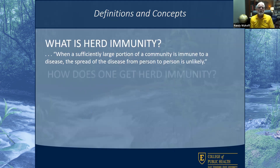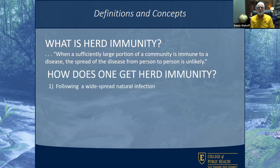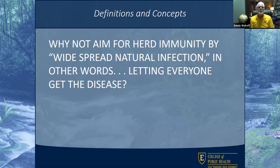There are two ways to get herd immunity: from widespread natural infection or from widespread use of a vaccine. When it comes to COVID-19, some people have said, why don't we aim for herd immunity by widespread natural infection — in other words, letting everyone get the disease?